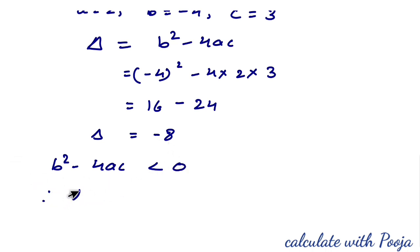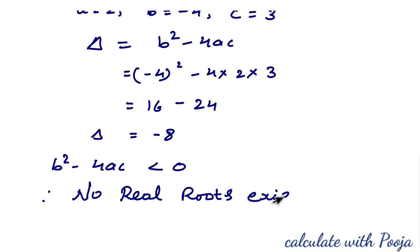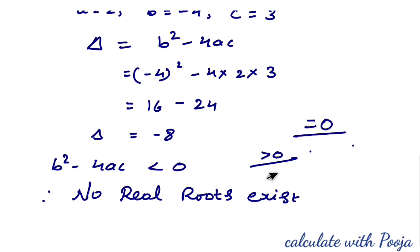Since the discriminant is −8, which is less than 0, there are no real roots. When Δ > 0 there are two distinct real roots; when Δ = 0 there are equal real roots; when Δ < 0 there are no real roots. This is how we determine the nature of roots.